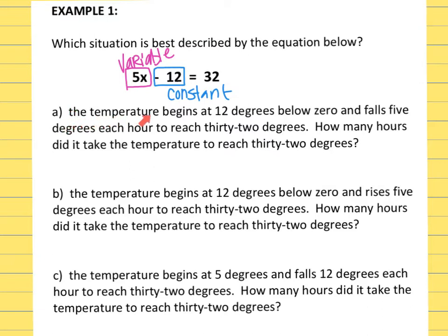Letter A says the temperature begins at 12 degrees below zero and falls 5 degrees each hour to reach 32 degrees. How many hours did it take the temperature to reach 32 degrees? When you read through here, the first number I come to is the temperature begins at 12 degrees below zero. That is a one time amount, the starting temperature, and it also says it is below zero, which gives me a clue that that's going to be negative.